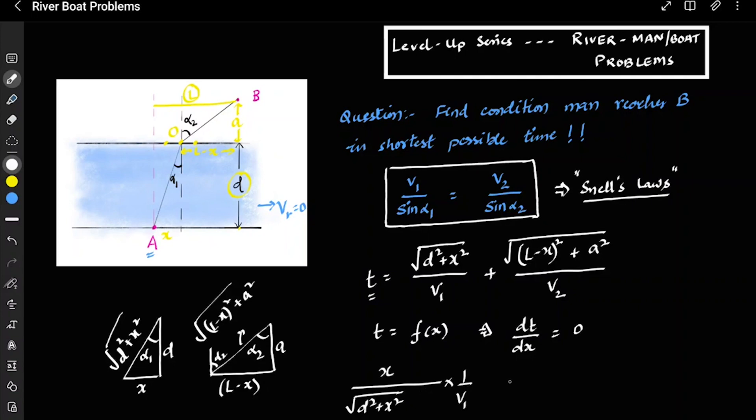Clearly you see it will be equal to x upon under root of D square plus x square into 1 by V1, minus L minus x, and you can do all these derivations on your own, upon under root of L minus x whole square plus A square multiplied by 1 by V2.